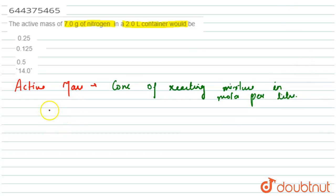In this question, the mass of nitrogen is given as 7 gram. Since number of moles is equal to given mass divided by molar mass.